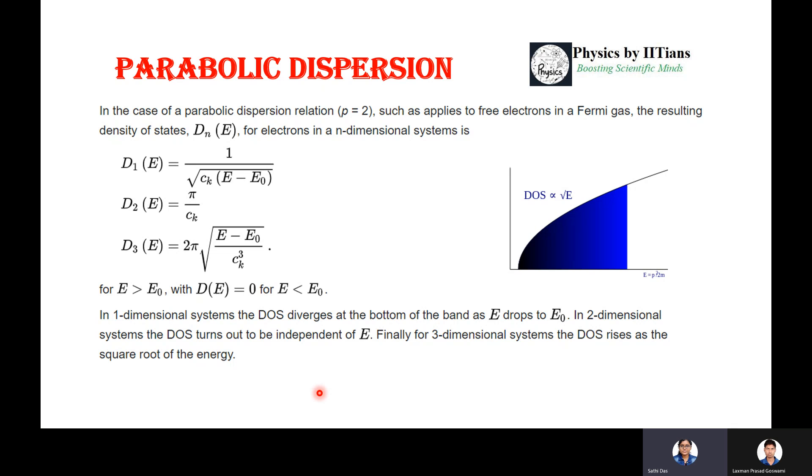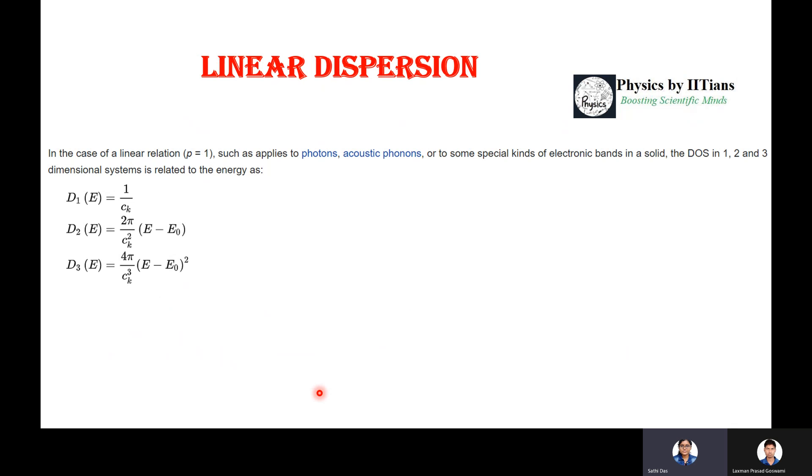Now suppose we take the dispersion variation not parabolic but linear, such as the case p = 1, which applies to photons and acoustic phonons. In this case, the density of states for three dimensions: D₁(E) is independent of E, D₂(E) is directly proportional to E, and D₃(E) is proportional to E².